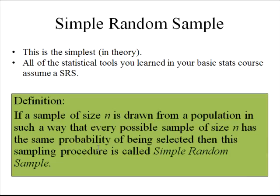Let's start with the simplest one: a simple random sample. In theory it's the simplest, but it's not so easy to obtain — you need a very good sampling frame. A simple random sample is like putting all the population names in a hat and drawing one at a time without replacement. The technical definition: if a sample of size n is drawn from a population such that every possible sample of size n has the same probability of being selected, then you have a simple random sample.